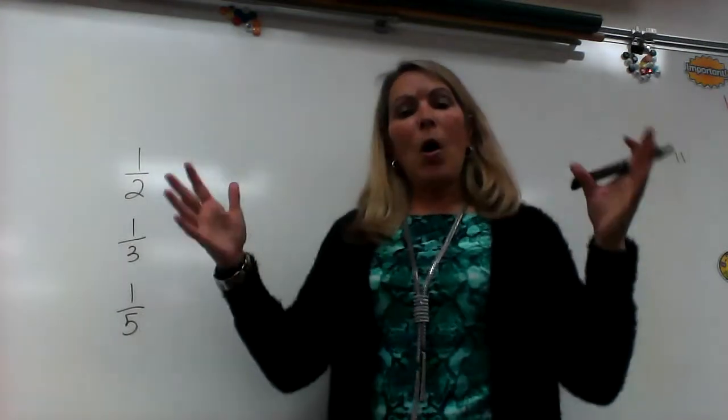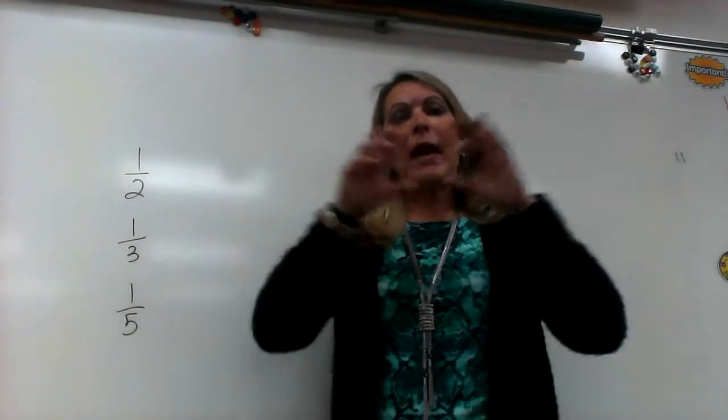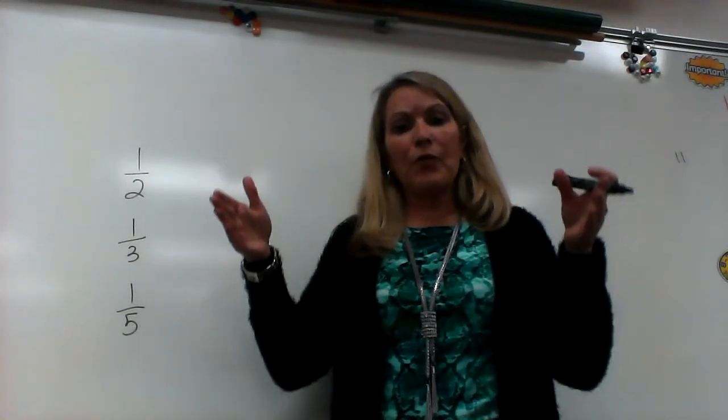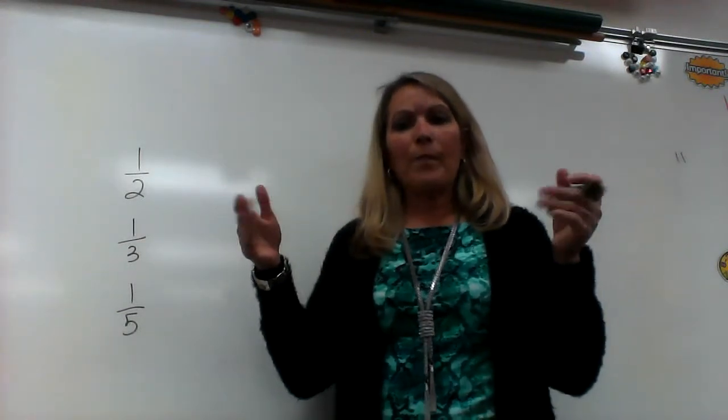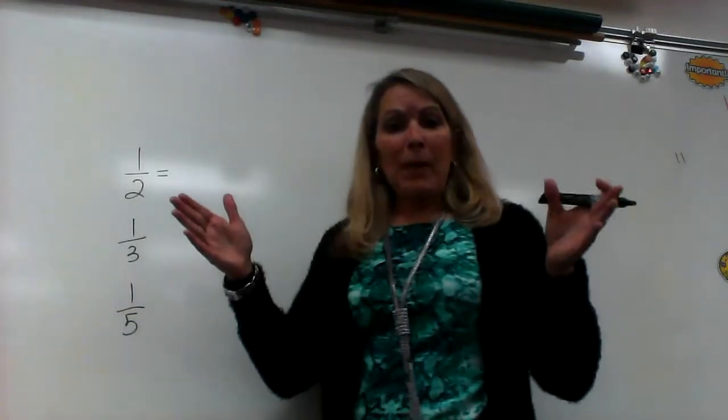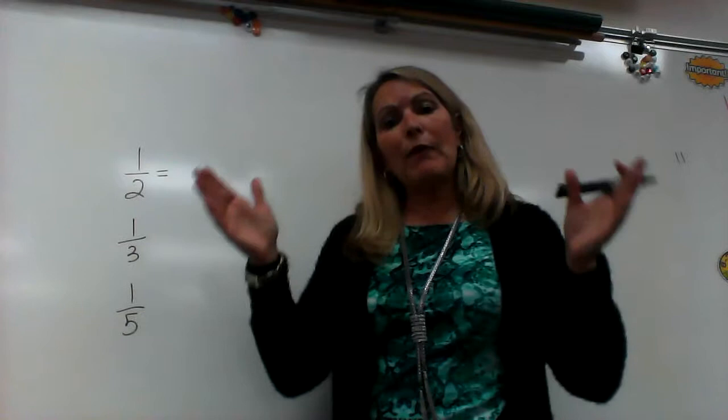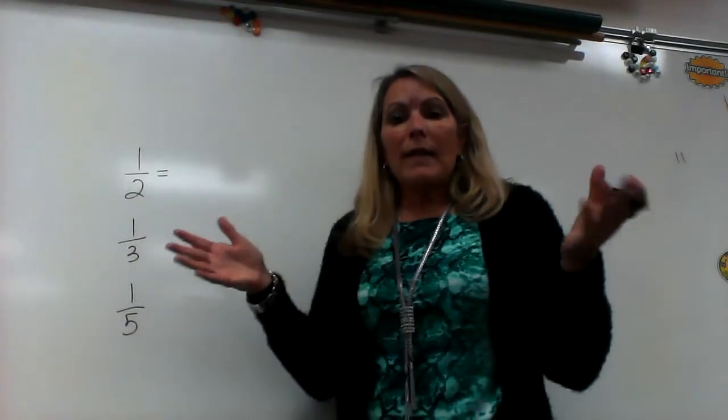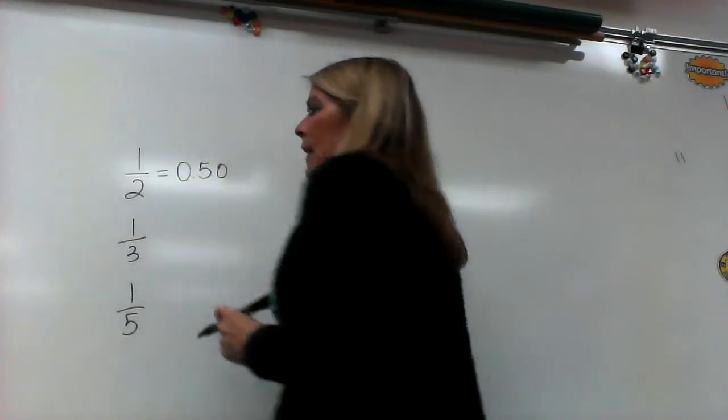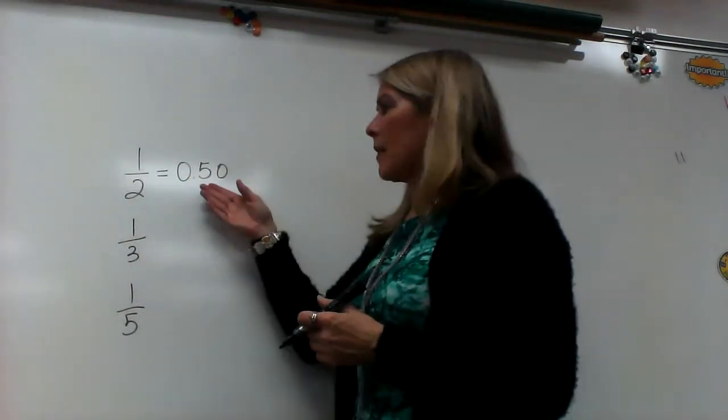You know that the whole is like, if you have a whole thing, then you have 100%. You have 100 hundredths of that whole. Well, half is going to be that piece divided into two, so you have two equal parts. What is half of 100? Half of 100 is 50 hundredths. So, one half is going to be 50 hundredths.